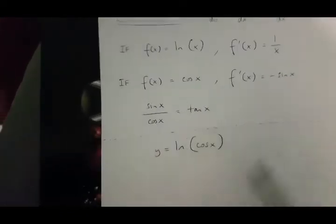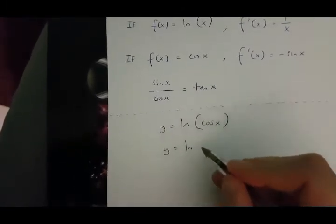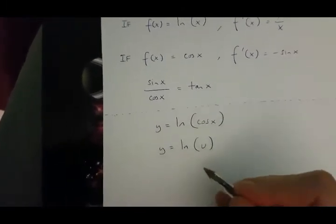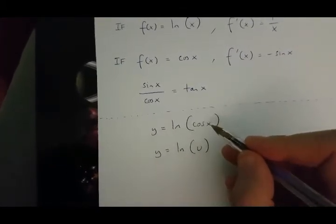Now, to differentiate this, we first have to say that y is equal to ln u. And u, in this case, is going to be equal to cos x.